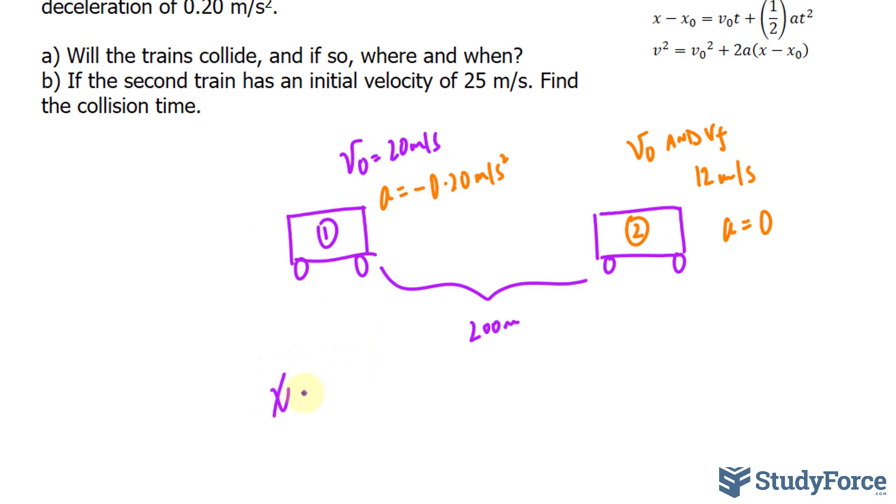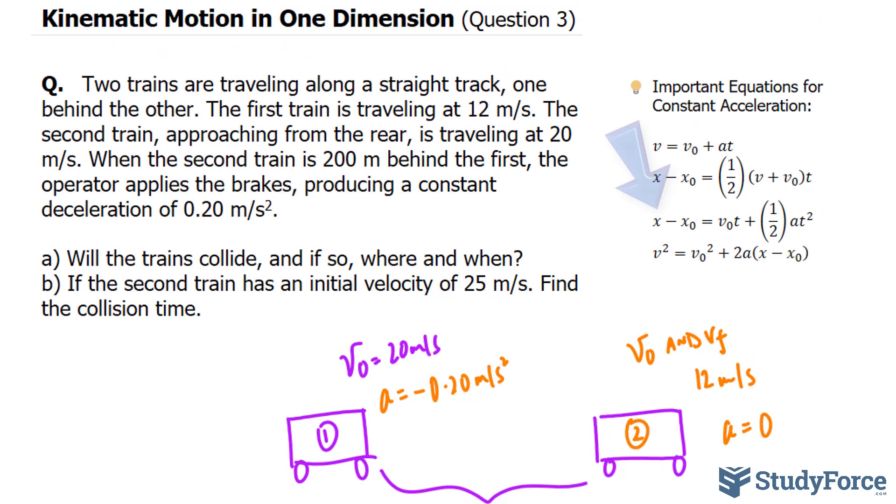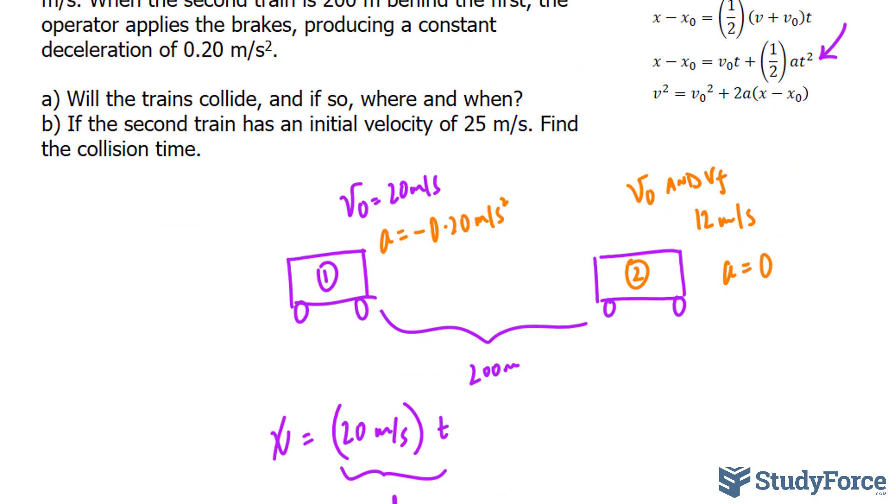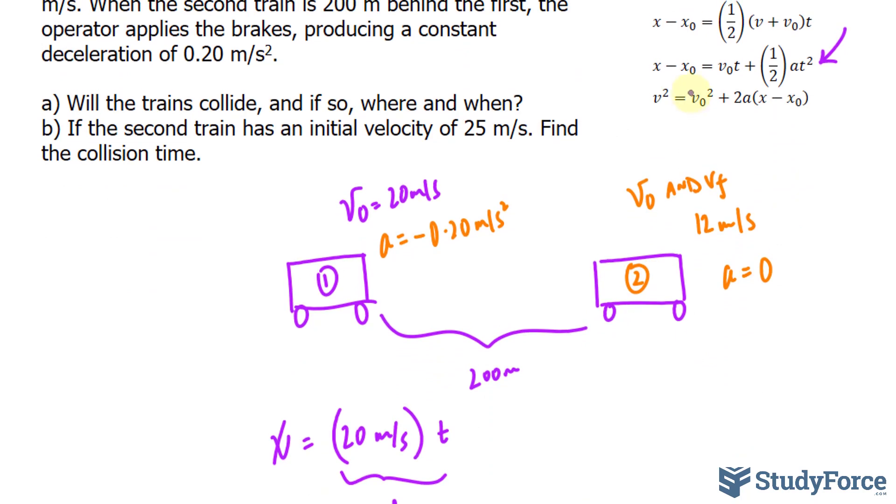To find the final distance of train 1, which I'll represent as x, we can take the velocity, its velocity when the brakes are first activated, 20 meters per second, and multiply it by the time. Because if we multiply the speed by time, we get distance. And in case you're confused, I am referring to this formula to find the final distance. So I have the initial distance, let's call it 0. So let's say that the point at which the train activates the brakes is when x is equal to 0.